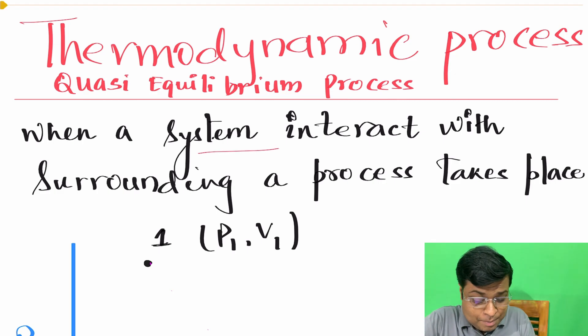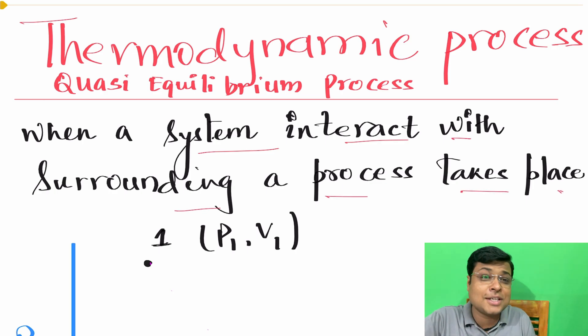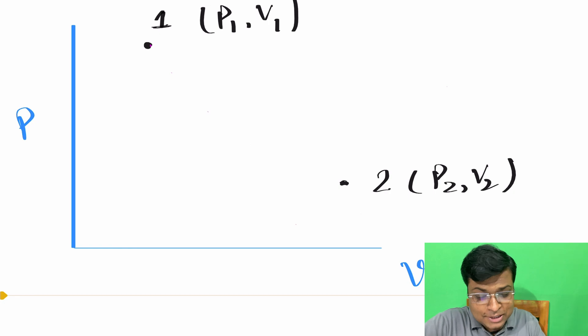That is called as thermodynamic process. So when a system interacts with its surrounding, a process takes place and that is called as thermodynamic process. You can show this on PV diagram. This is state 1 where pressure is P1, V1. State 2 where pressure is P2, V2. And between these two, a process takes place that is called as thermodynamic process.